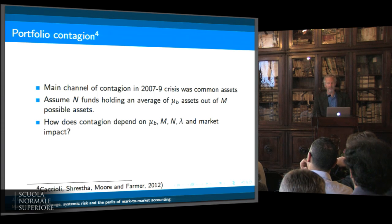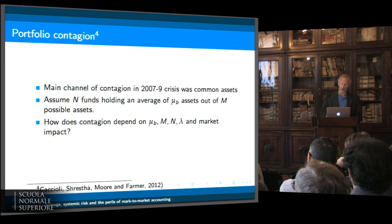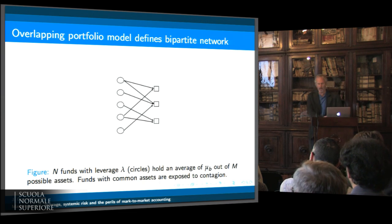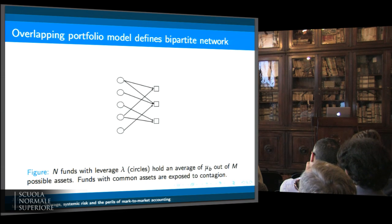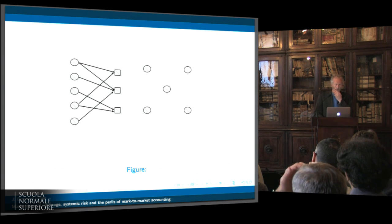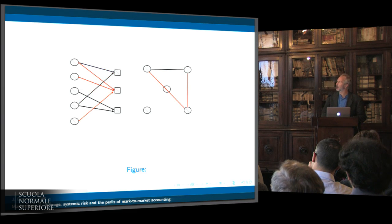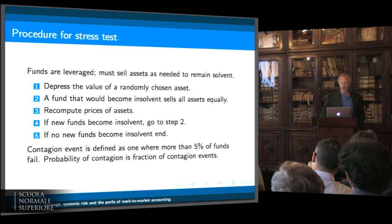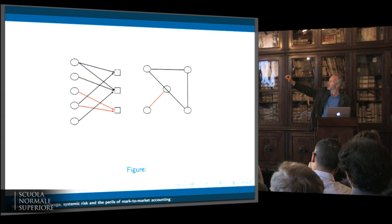We're going to use impact as a rule and combine that with network effects. In particular, we're going to look at N funds holding an average of M out of N possible assets and ask how contagion depends on those parameters and on the leverage and market impact. You can think about this as a bipartite network where the elements are the funds over here and the assets over here. When banks hold common assets, that introduces contagion. This applies not just to banks, but to hedge funds and any funds using leverage to manage their assets. There's a projected network that makes implicit connections between banks when they hold common assets.